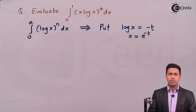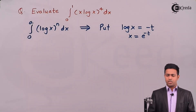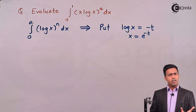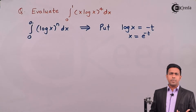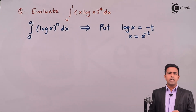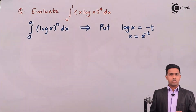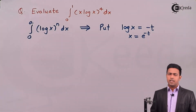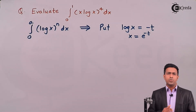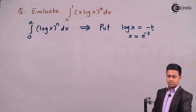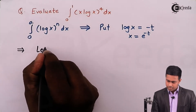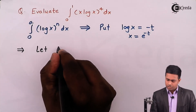In our question, we have the log x term and x⁴ as an extra algebraic term — no worries, because the gamma function definition also requires an algebraic term. Since we have the log term, we will put log x = -t and convert the integral into the definition of the gamma function. Let this integral be called I.